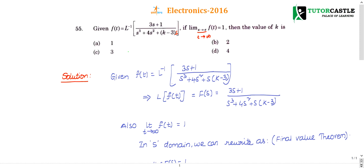Question number 55: Given that f(t) is equal to the inverse Laplace transform of (3s + 1) divided by (s³ + 4s² + k - 3). There are errors in this 2016 paper, so please try to correct them.